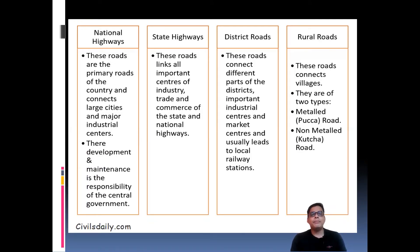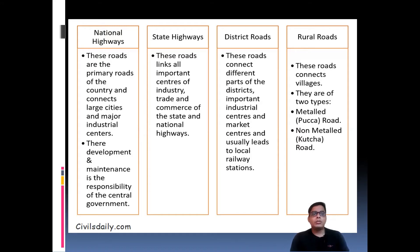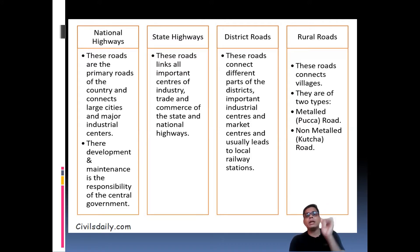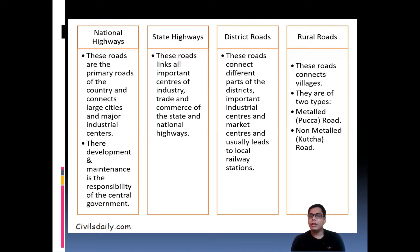Now let us discuss the different types of roads in India: national highways, state highways, district highways, and rural highways. National highways are the primary roads of the country, connecting large cities and major industrial areas, and are developed and maintained by the central government. State highways link important centers of industry, trade, and commerce within states and connect to national highways.